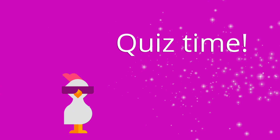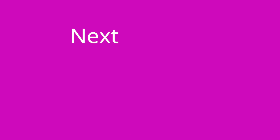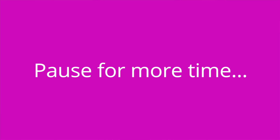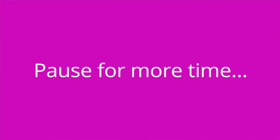It's quiz time — three questions for you. Question one: Marasmus is a type of malnutrition caused by a deficiency in calories. True or false? The answer is true. Question two: Kwashiorkor is caused by a deficiency in blank. The answer is protein. Question three: Which form of malnutrition is characterized by a distended abdomen? The answer is Kwashiorkor.